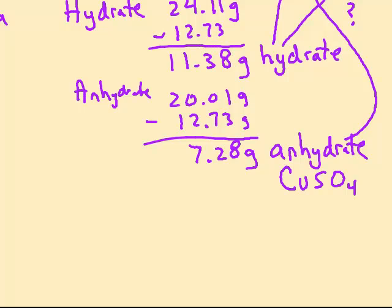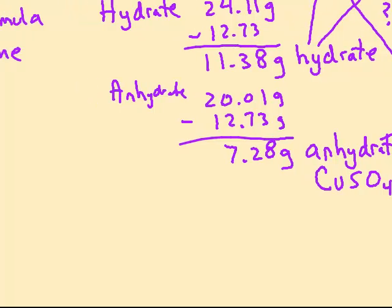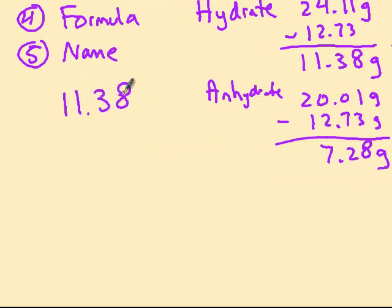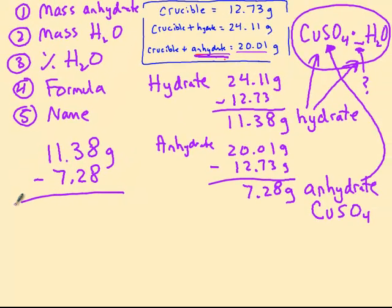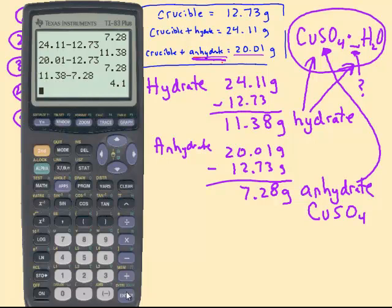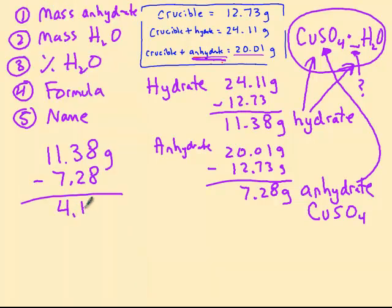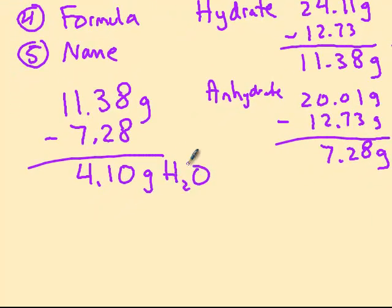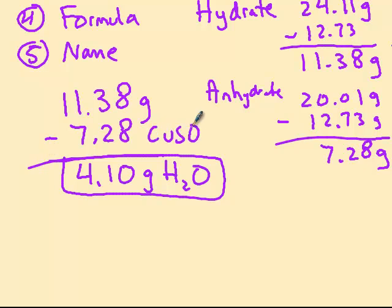Okay, so now our second calculation. What is the mass of water? So the mass of water would be the hydrate, which is the CUSO4 and the water, was 11.38. The CUSO4 is 7.28. So we have 11.38 minus 7.28, I know, easy math, shouldn't use the calculator, 4.10 grams of H2O. So now I have the mass of water, I have the mass of CUSO4, and I have all the information I need then to solve the rest of the calculations.